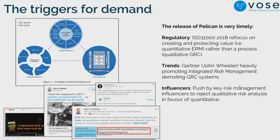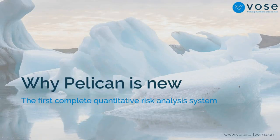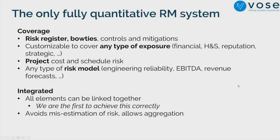So why is Pelican new? It's new because it incorporates a lot of different things you will only have seen in individual software products, and you certainly have never seen them integrated or fully quantitative. Risk registers — everyone's used to these, probably sitting in a spreadsheet somewhere. Bowtie diagrams — this is a new way I'll be describing, allowing you to strategically talk about how you might manage risk, why risks might occur, and the different consequences that can arise.